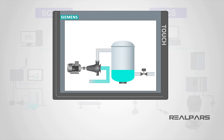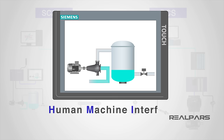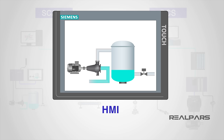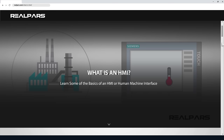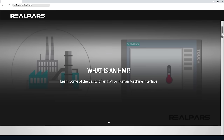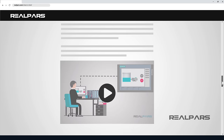Let's start with the device that plant personnel use to interact with automated processes. Human-Machine Interface, or HMI, panels are the primary graphical interface between the plant processors and processes and the operators interacting with and controlling those processes. A previous video on what is an HMI is available, linked in the description area.